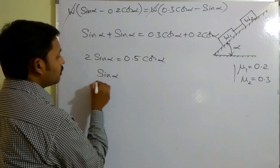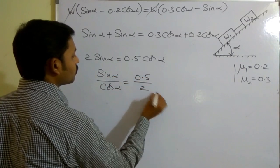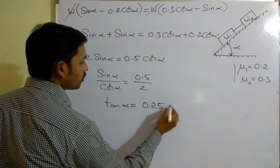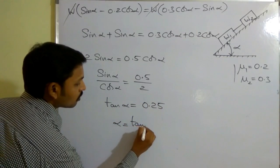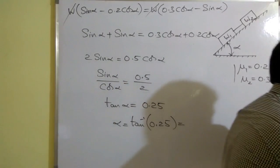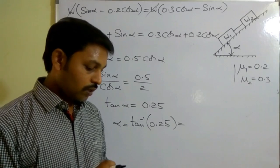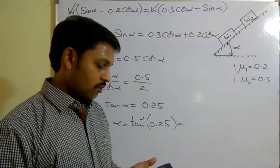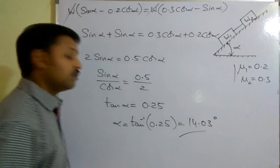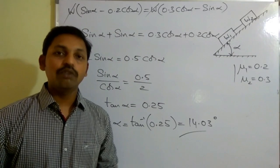From 2 sin alpha equals 0.5 cos alpha, we get tan alpha equals 0.5 divided by 2, which equals 0.25. Therefore alpha equals tan inverse of 0.25, which gives 14.03 degrees. This is the value of alpha. Hope you like it — if you liked this video, click the like button and don't forget to subscribe.